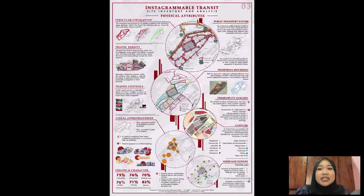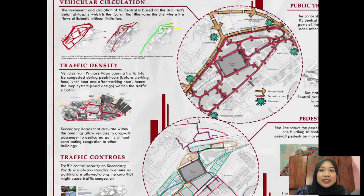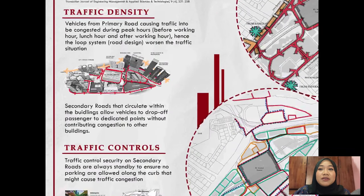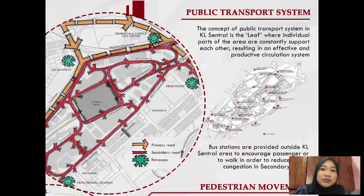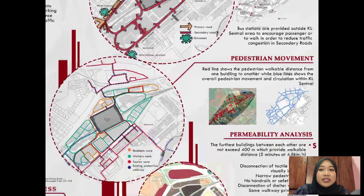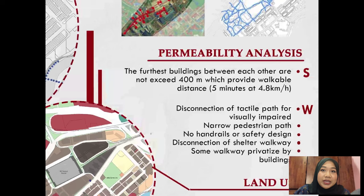Circulation is divided into two which are vehicular circulation and pedestrian movement. As for vehicular circulation, KL Central can be accessed easily as it is connected with major roads and highways. Although traffic control security is always on site to avoid vehicular users parking along the kerbs, it is not able to solve the overall traffic congestion. This is where the public transportation system is introduced, where users and visitors are encouraged to walk. Bus stations are provided outside KL Central to reduce traffic congestion. As for pedestrian movement, it is divided into three: resident route, workers' route and tourist route. All these routes are within walkable distance where the furthest building does not exceed 400 metres and 5 minutes of walking. However, there are some weaknesses including disconnection of tactile paths for visually impaired users, narrow pedestrian paths, no safety design, disconnection of sheltered walkway and the privatised route.